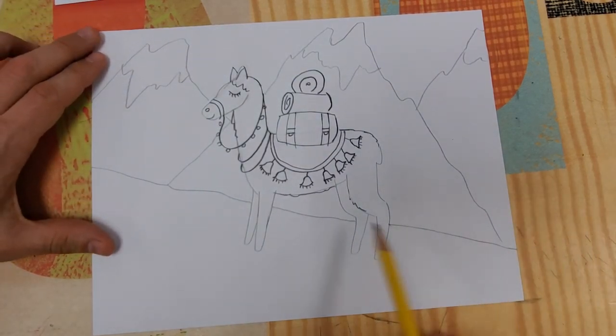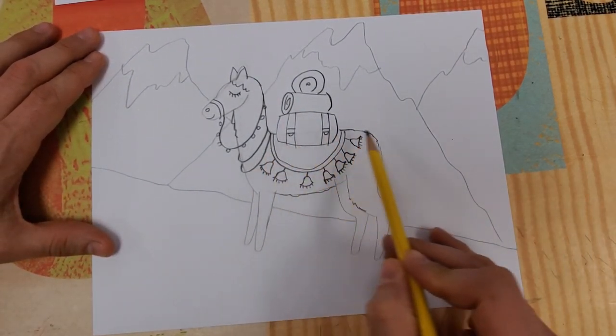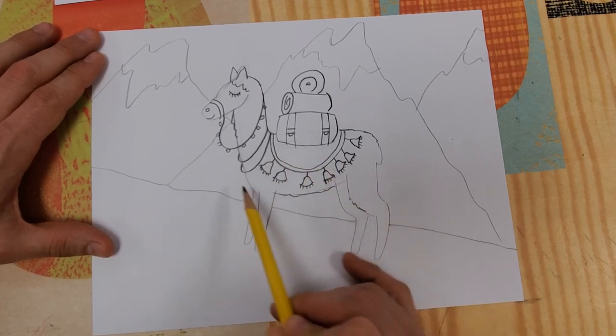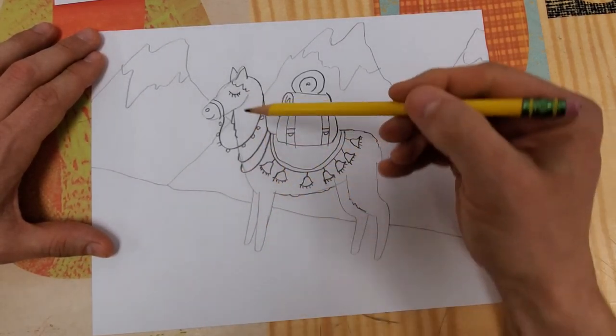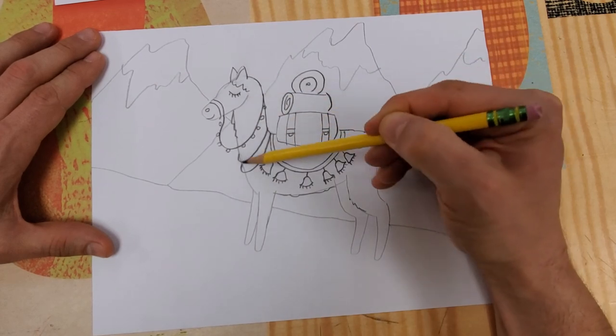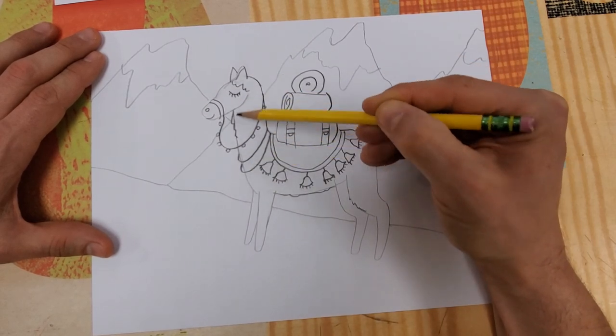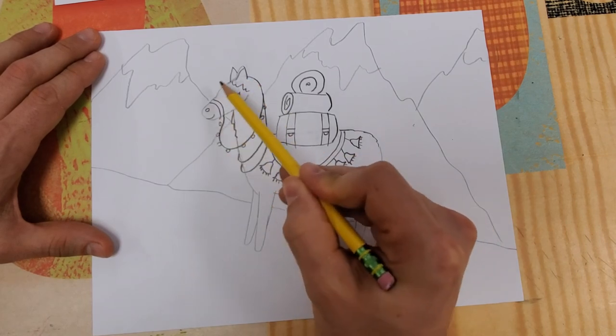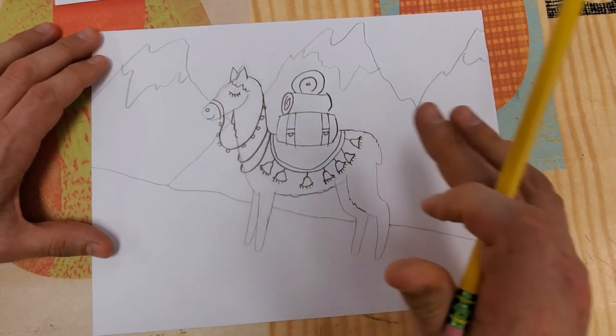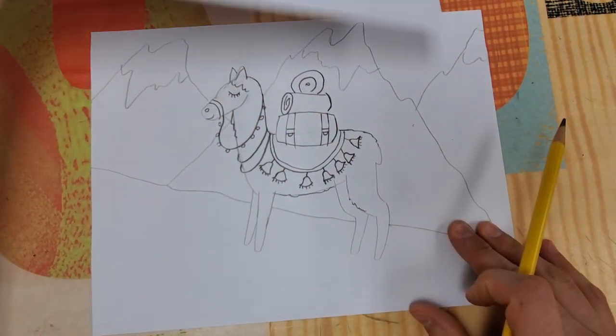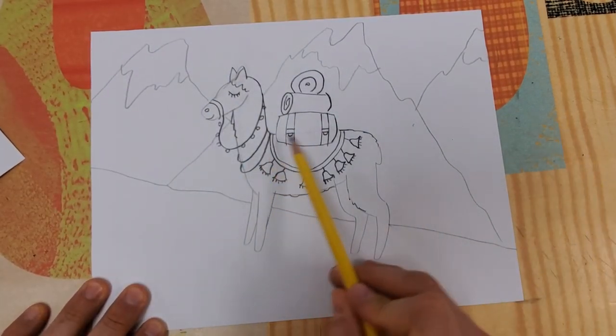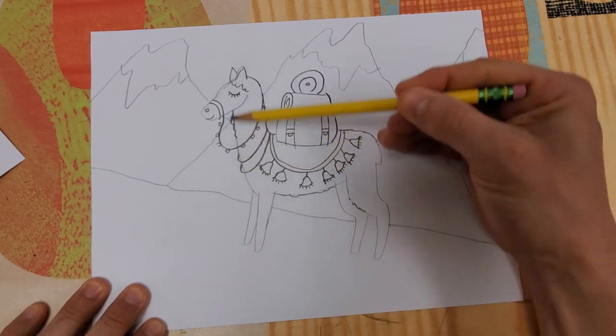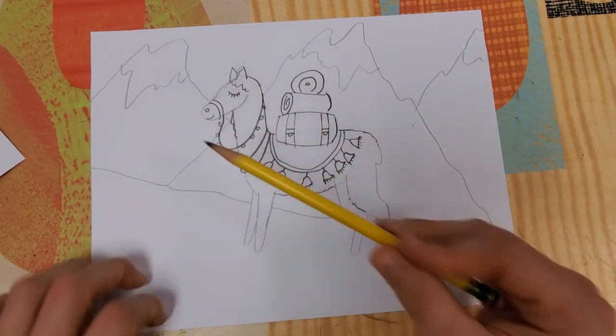The very first thing we're going to do is create three really gentle ovals. The first one will represent the main part of the llama's body. Second one will be tall and skinny, which we will turn into the neck, and then we'll do a smaller one for the head. These are going to give us a little framework that we will draw into.